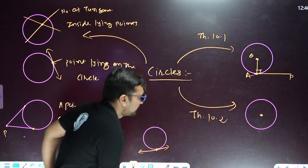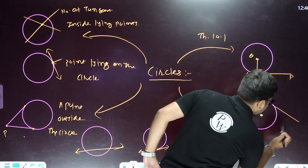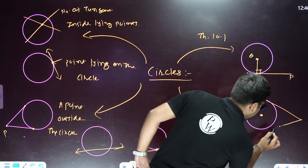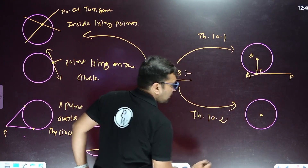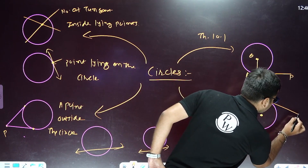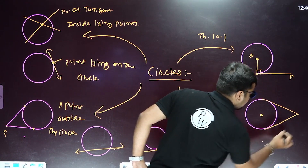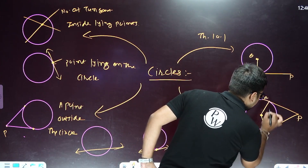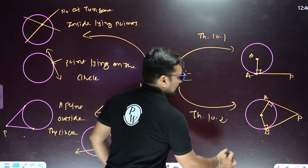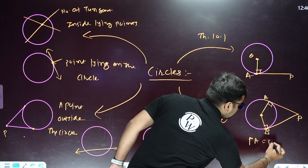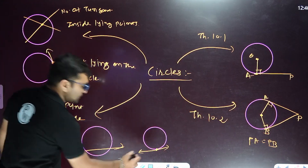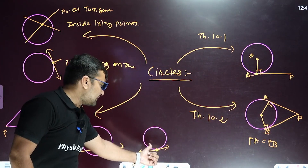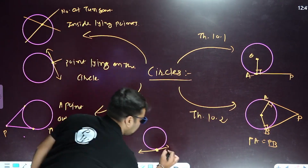In Theorem 10.2, from an external point P, if you draw two tangents, they are both equal in length — PA equals PB.